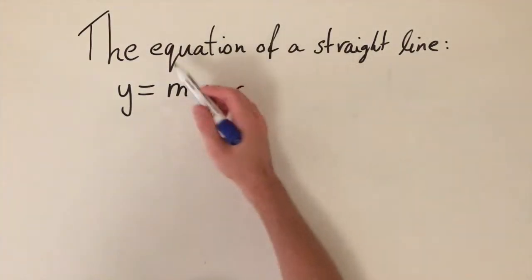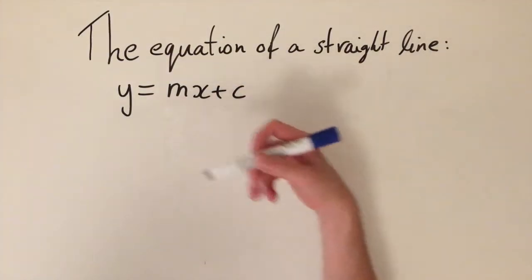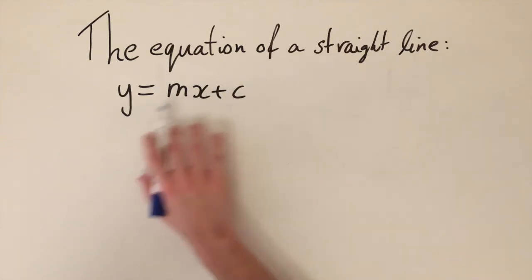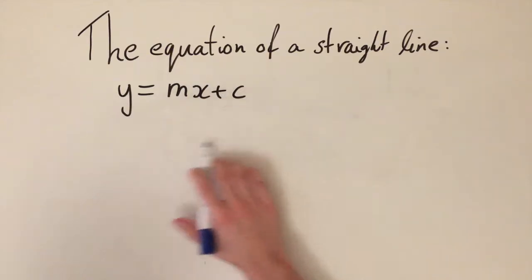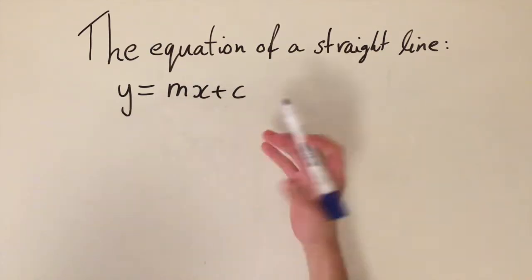In this video we're going to be looking at the equation of a straight line and different forms of how we can represent the equation of a straight line. We're going to be looking at a few examples and sketching them, but first let's try and decompose what this equation right here means. So what does each letter represent?